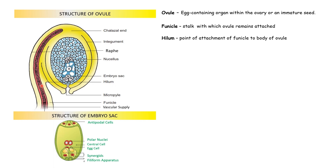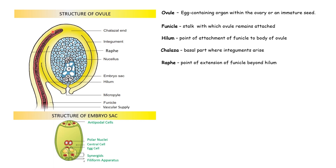The basal part of the ovule, where the integuments arise, is known as chalaza. The point of extension of the funicle beyond the hilum alongside the body of the ovule is known as raphae — meaning this extended part of the funicle beyond the hilum, going along the ovule, is known as raphae. The main body of the ovule consists of a central mass of tissue known as nucellus. This nucellus is surrounded by one or two envelopes called integuments.